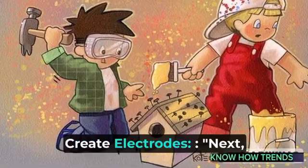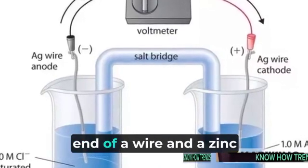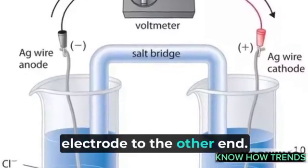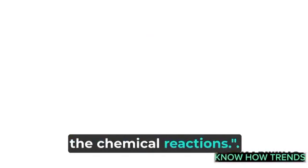Step 2: Create electrodes. Next, let's create our electrodes. Attach a copper electrode to one end of a wire and a zinc electrode to the other end. These electrodes will be placed inside the toilet to harness the chemical reactions.